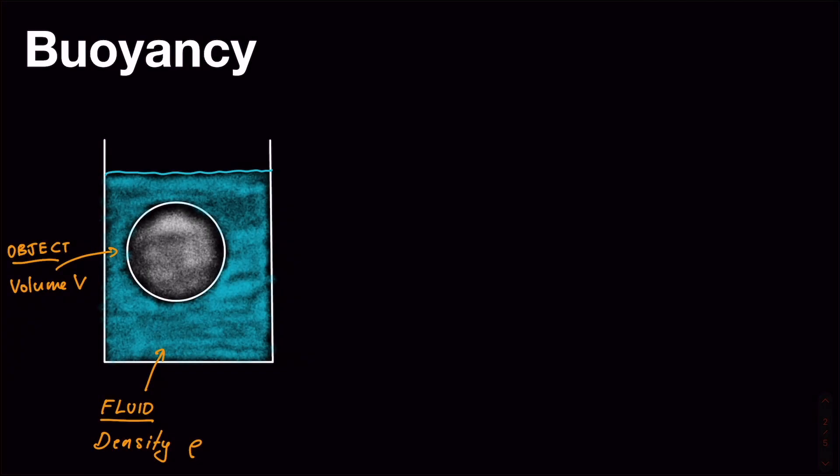Imagine that we have an object of volume V, that's this white thing, suspended in a fluid, that's the blue fluid which has a density of rho. Now the pressure of the fluid means basically that it's going to be applying forces to the boundary of the object all around it.